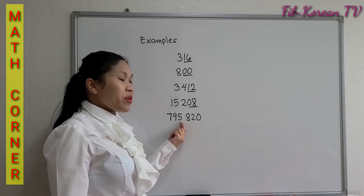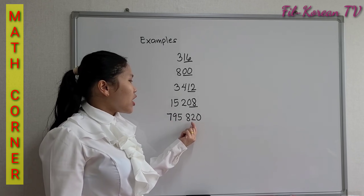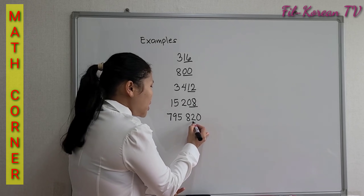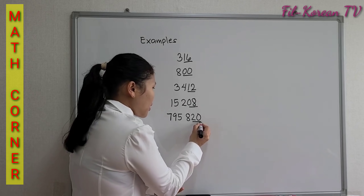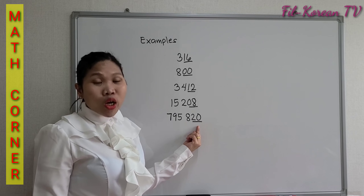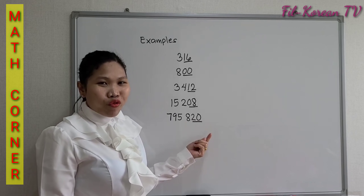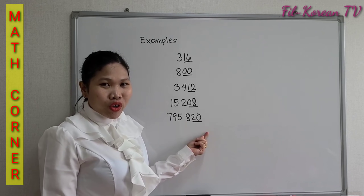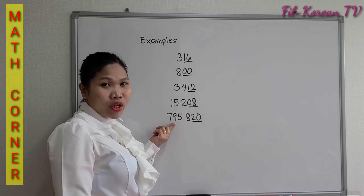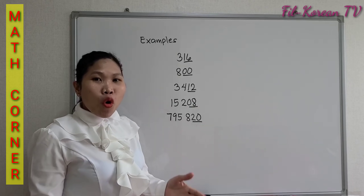Last example: 795,820. The last two digits form a number 20. 20 is a multiple of 4, so this number is divisible by 4.